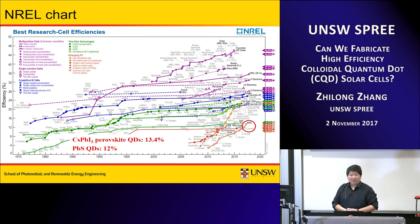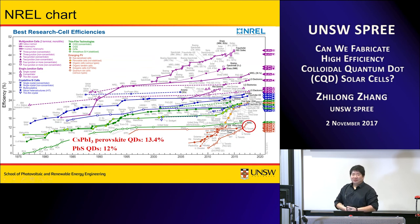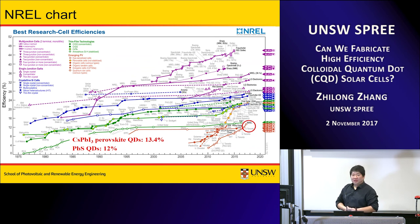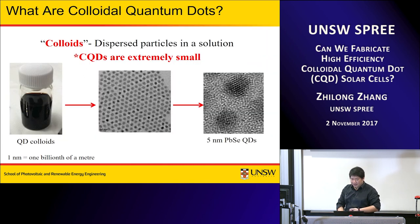This is the famous NREL chart showing efficiencies of different types of solar cells, and colloidal quantum dots are included in this chart. The first certified efficiency was reported in about 2010 at around 3%, and improvement over the years has been quite impressive. Now people are achieving a top efficiency of about 13.4% — also based on perovskite materials — while lead sulfide quantum dot solar cells are achieving about 12% at the moment.